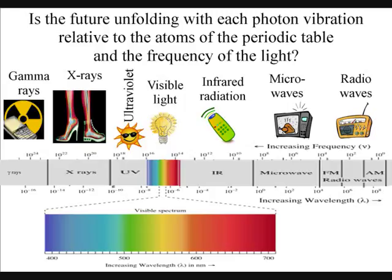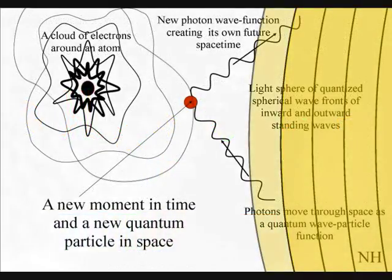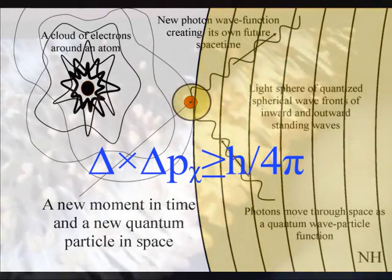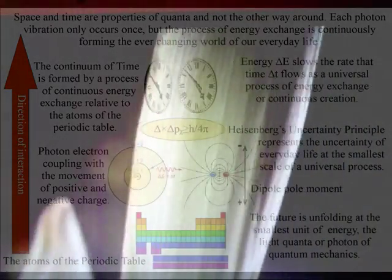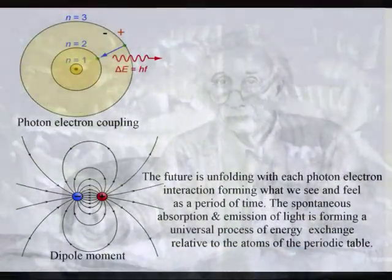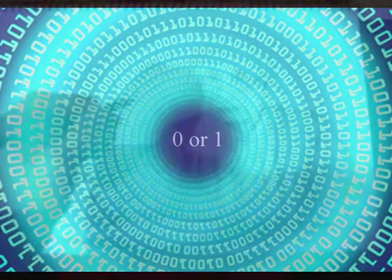If we start with the electromagnetic force, carried by the photon forming the movement of charge and creating the flow of electric and magnetic fields — in this theory, it is this interaction between the photons and the electron probability cloud of the atoms that forms the ever-changing world of our everyday life that we see and feel as the passage or continuum of time. We have the spontaneous absorption and emission of light, with each photon oscillation or vibration only occurring once, but with the process of energy exchange as a whole forming a unique and uncertain future. With the wave-particle duality of light and matter in the form of electrons acting like the bits or zeros and ones of a computer, forming a blank canvas that we can interact with, forming the possible into the actual.